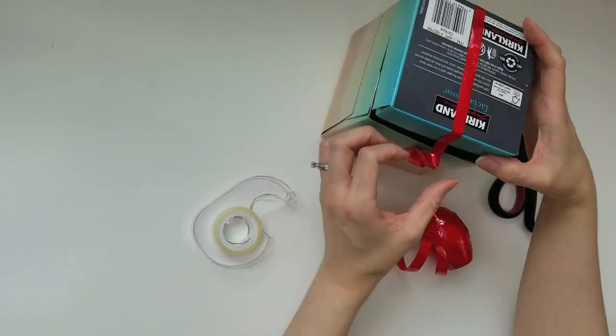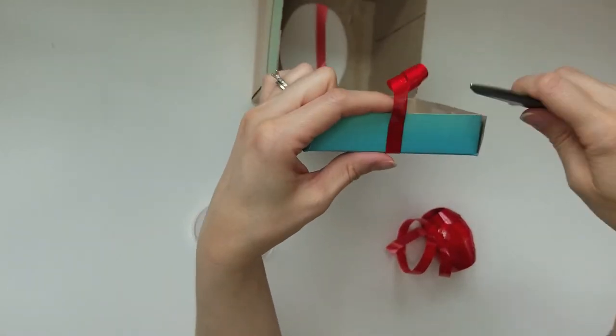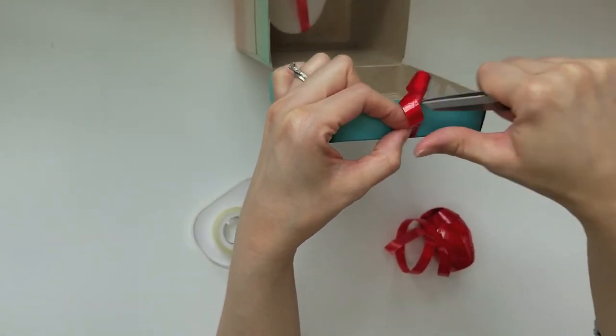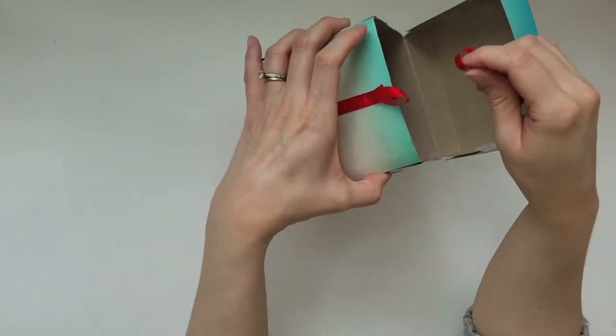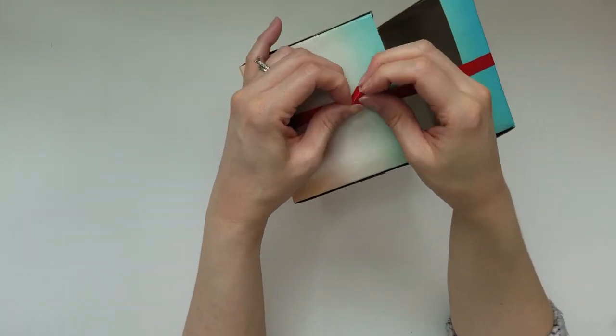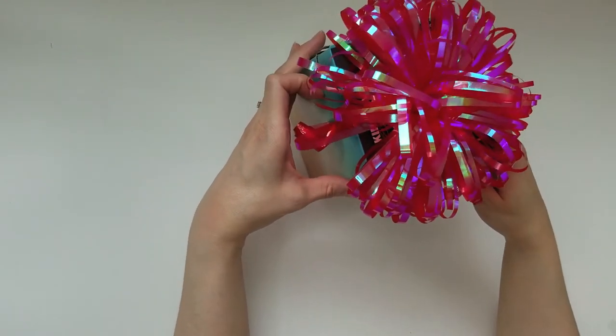In essence, what we're making is a latch mechanism that keeps the box closed. And what I'm showing you here is the bare bones of the decorating process. You can certainly wrap the box as long as you wrap the lid separate from the bottom. The last step is to secure a bow to the top.